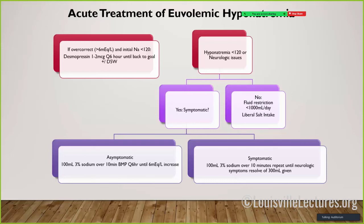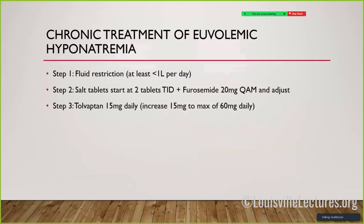If someone is overcorrecting, D5W is not very effective. Most experts now recommend desmopressin if you overshoot. As long as correction stays under 10 millimoles over 24 hours you're probably okay, targeting near 6. In hypovolemic cases many experts recommend giving desmopressin before aggressive fluid resuscitation because those patients can be very hard to manage.